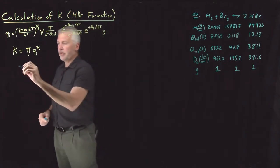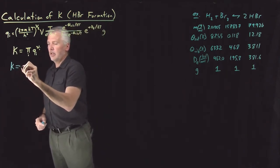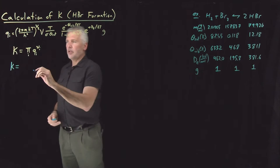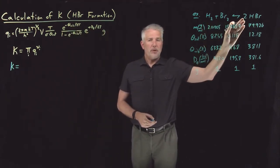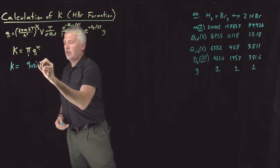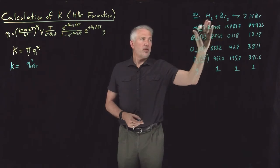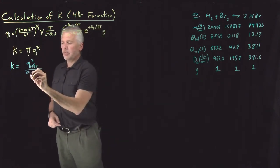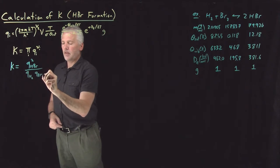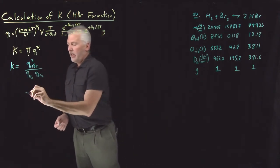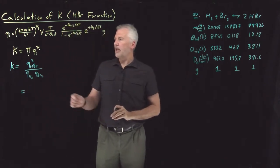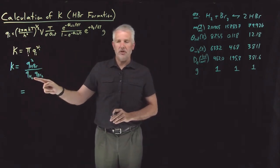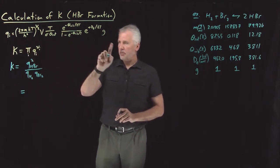The equation we plug into is the expression for the equilibrium constant, taking each partition function raised to its stoichiometric coefficient. The products are HBr with a stoichiometric coefficient of 2 in the numerator, and the reactants are H2 and Br2, each with a stoichiometric coefficient of 1, appearing as H2 to the negative 1 and Br2 to the negative 1 in the denominator.